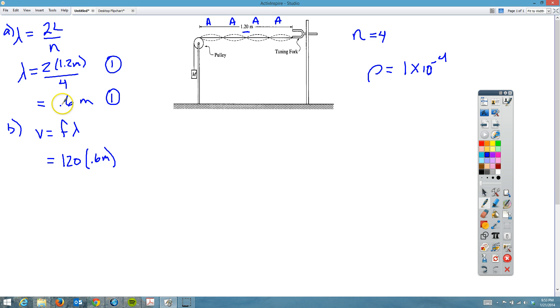If you have a wrong answer in part A, as long as you are consistent with that answer in part B, that's what you need to carry through. You get a point for substitution and then you have an answer of 72 meters per second, and that is the second point.